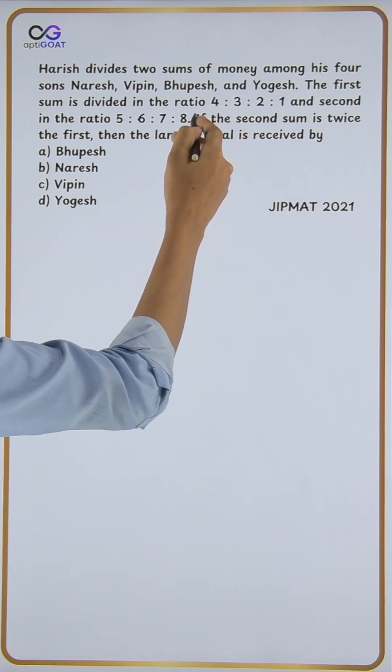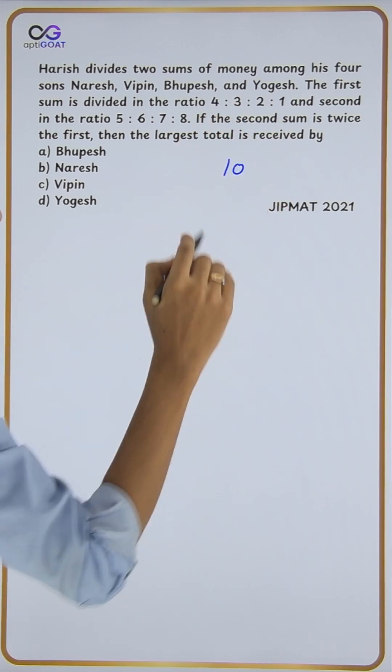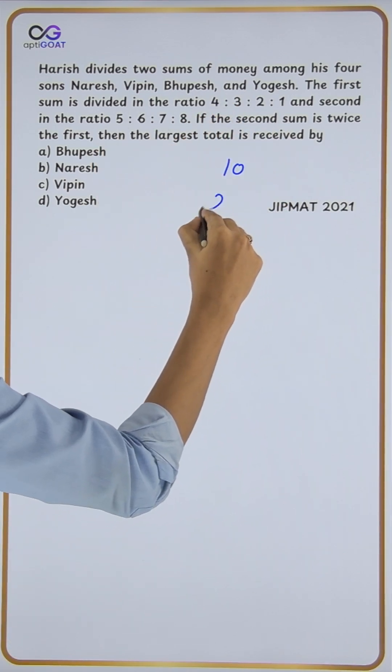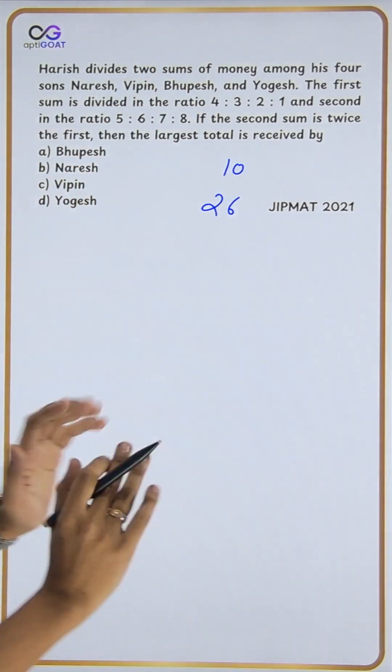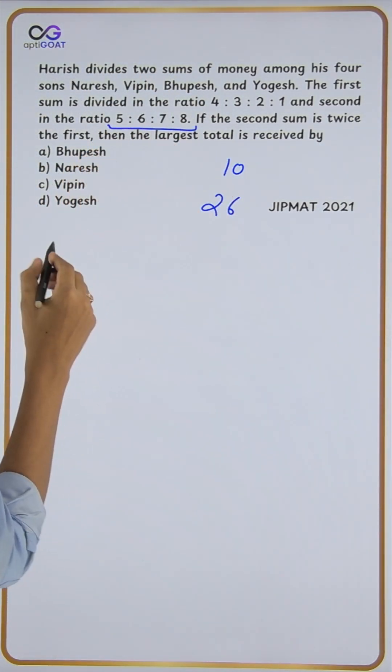But unfortunately, the first ratio sum totals to 10, while the second totals to 26. This makes it a bit tricky to solve. Let's approach this effectively - let's assume the second sum is 260.